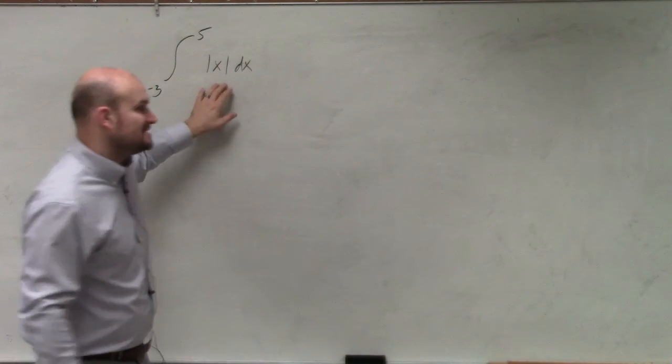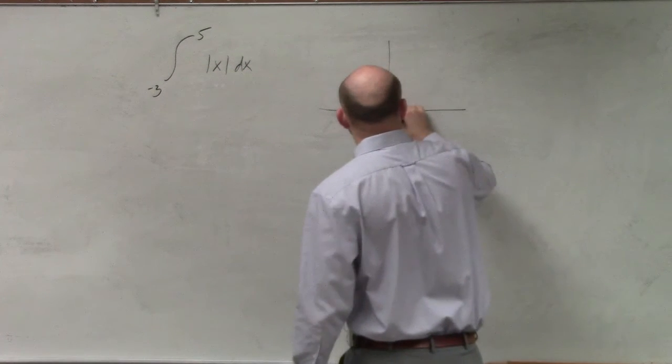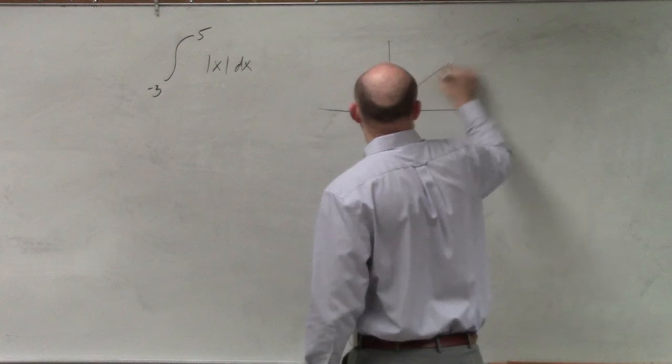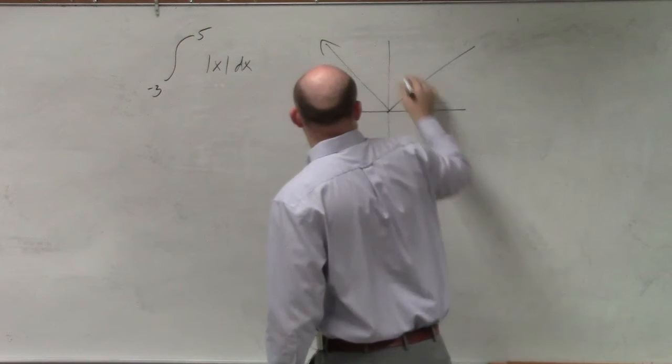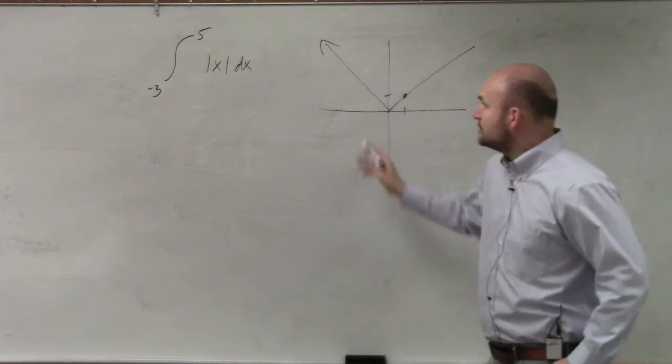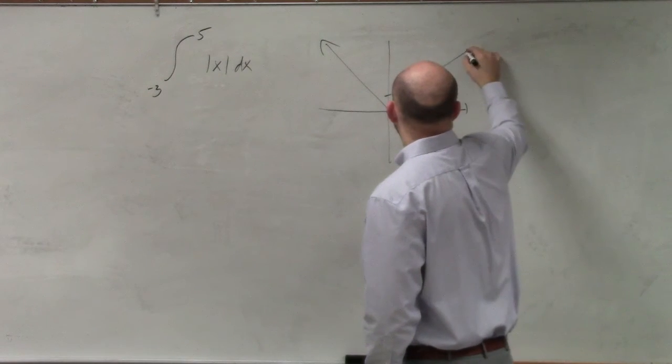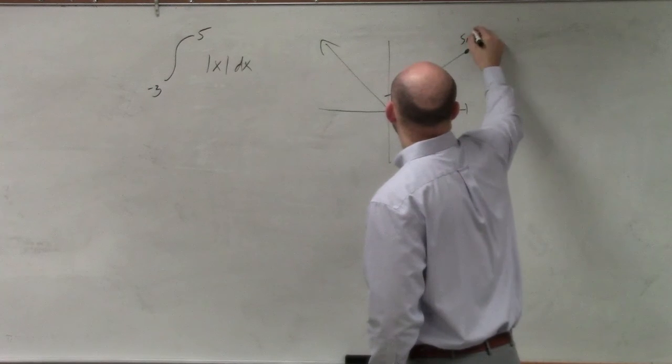But what we can do is definitely sketch the absolute value graph. And remember, this has a one-to-one kind of slope. So when I go over one, two, three, four, five, I go up five. So that's five comma five.